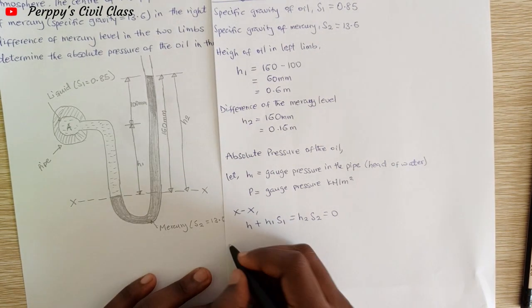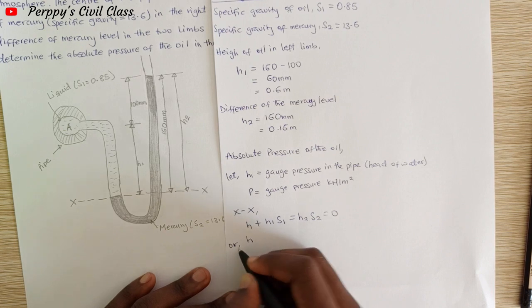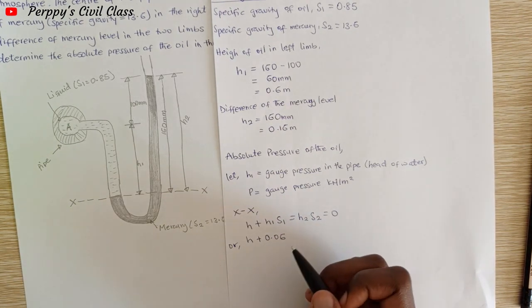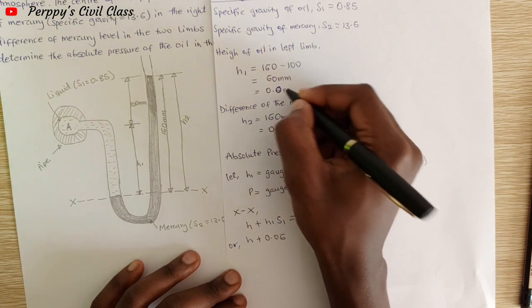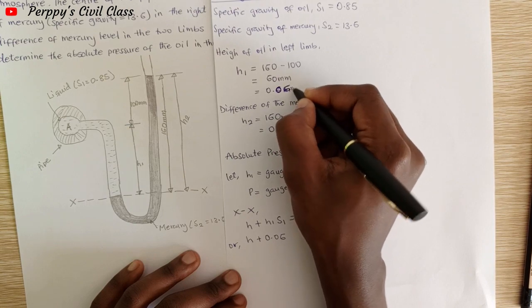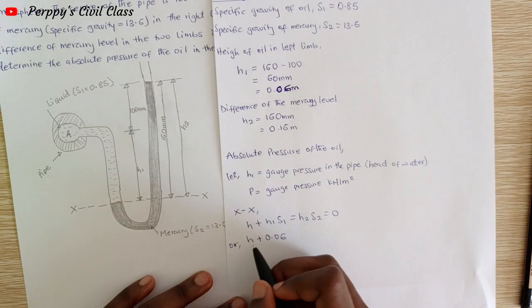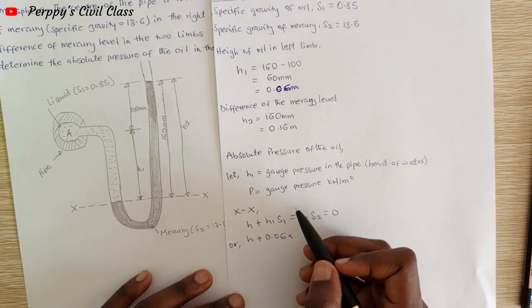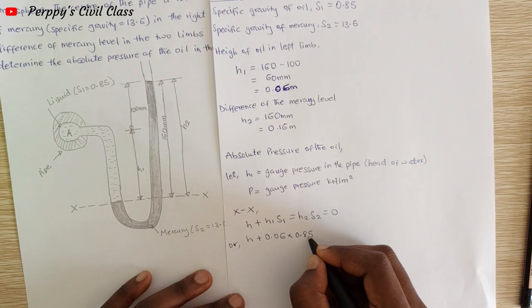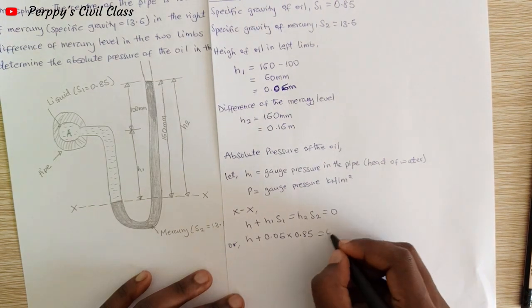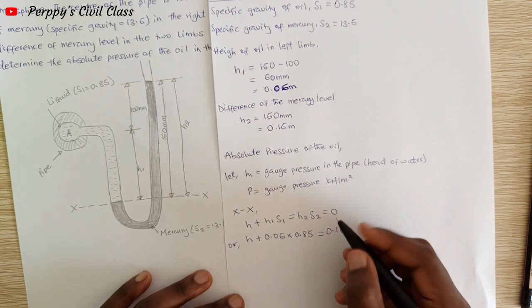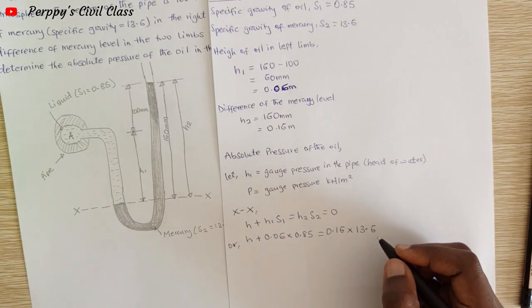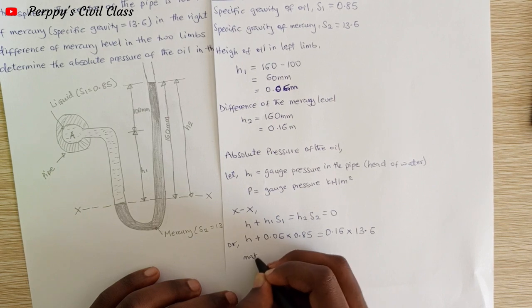So h plus 0.06 multiplied by S1, which is 0.85, equals h2, which is 0.16, multiplied by S2, 13.6. Now let's make h the subject.